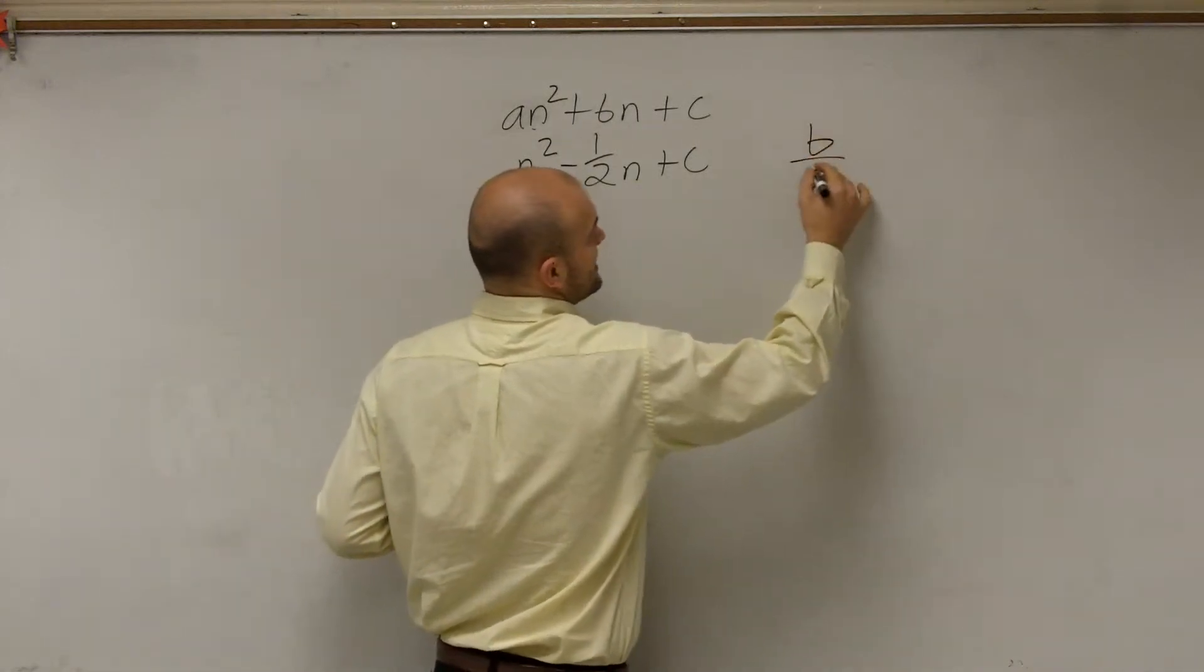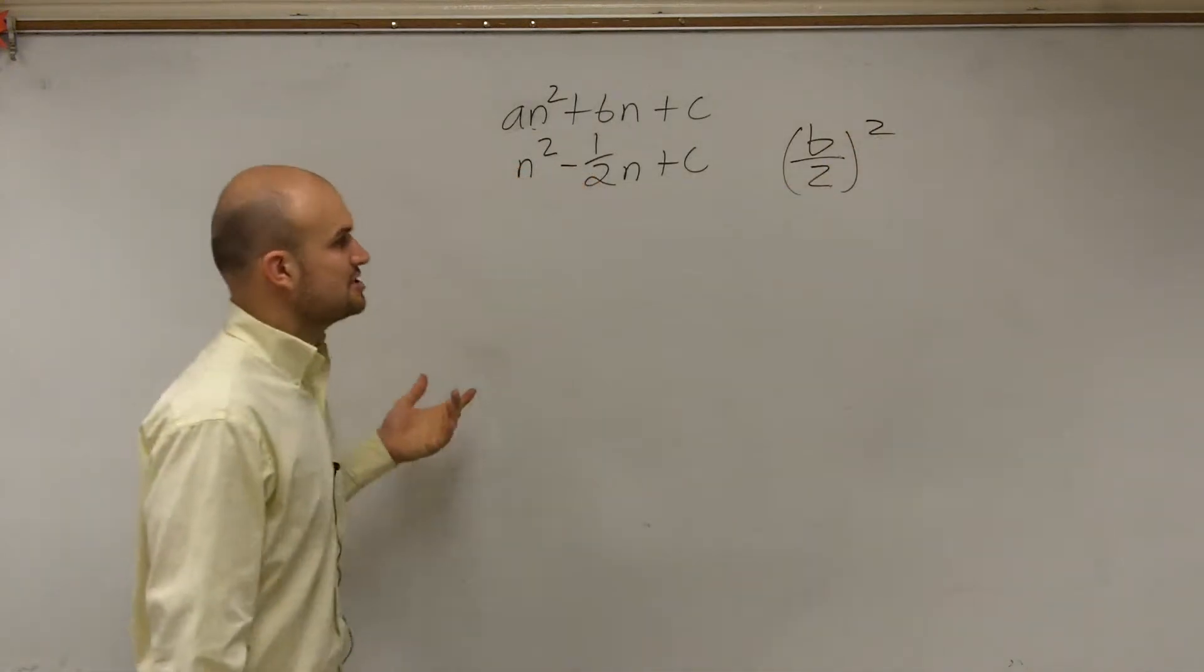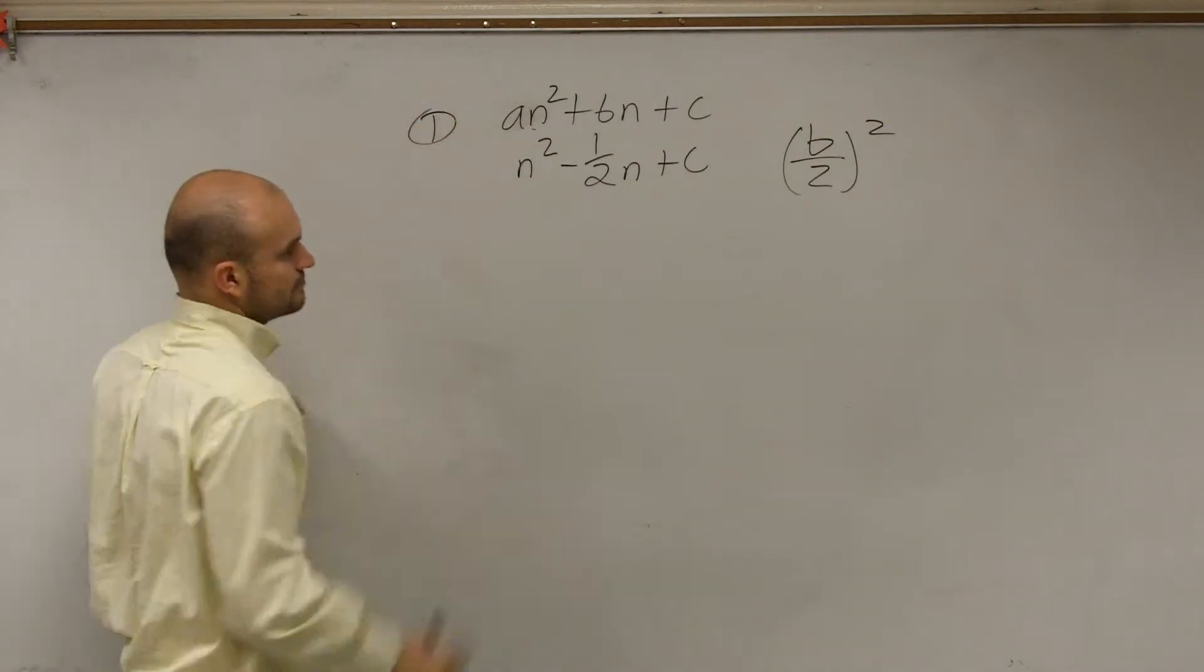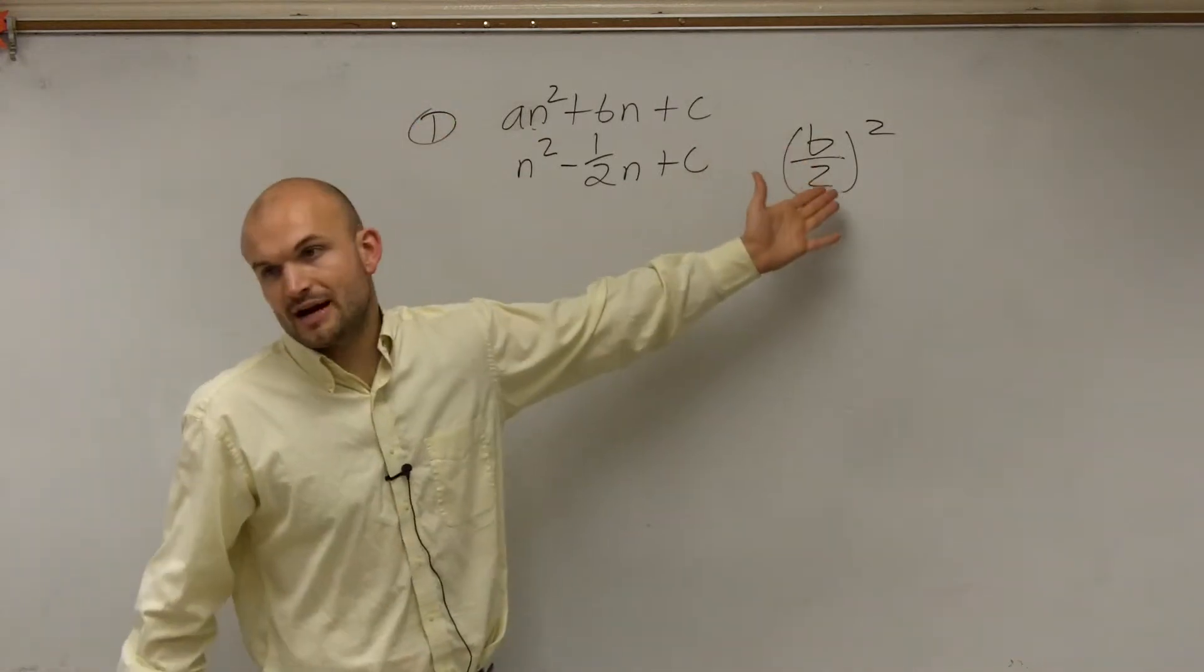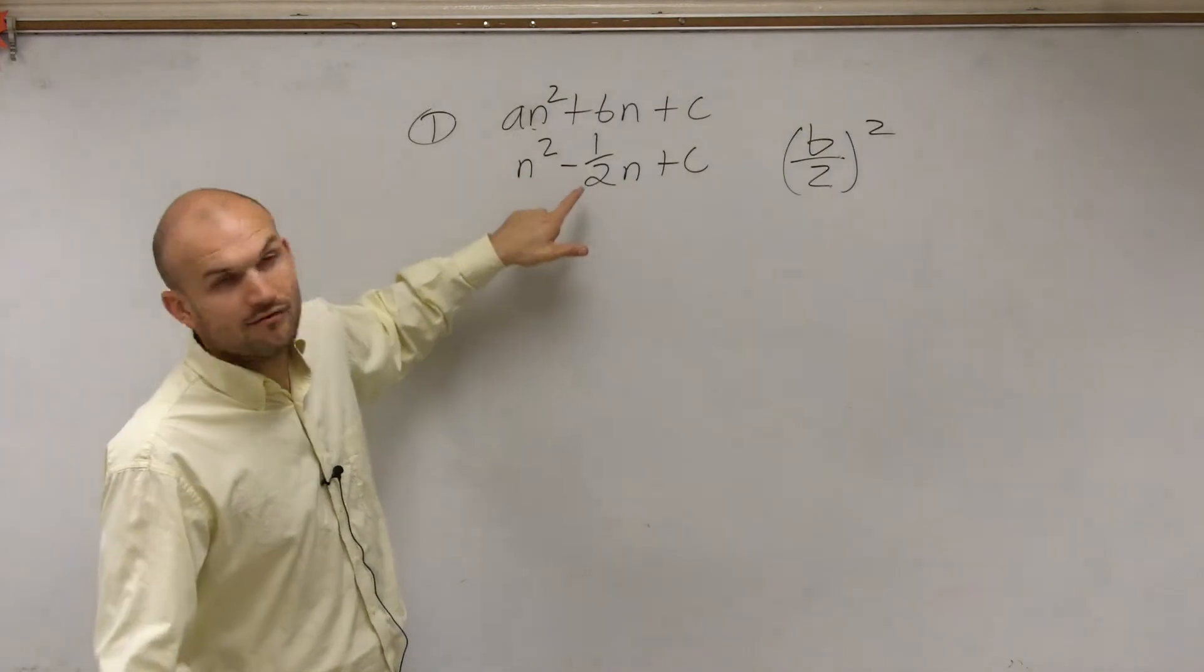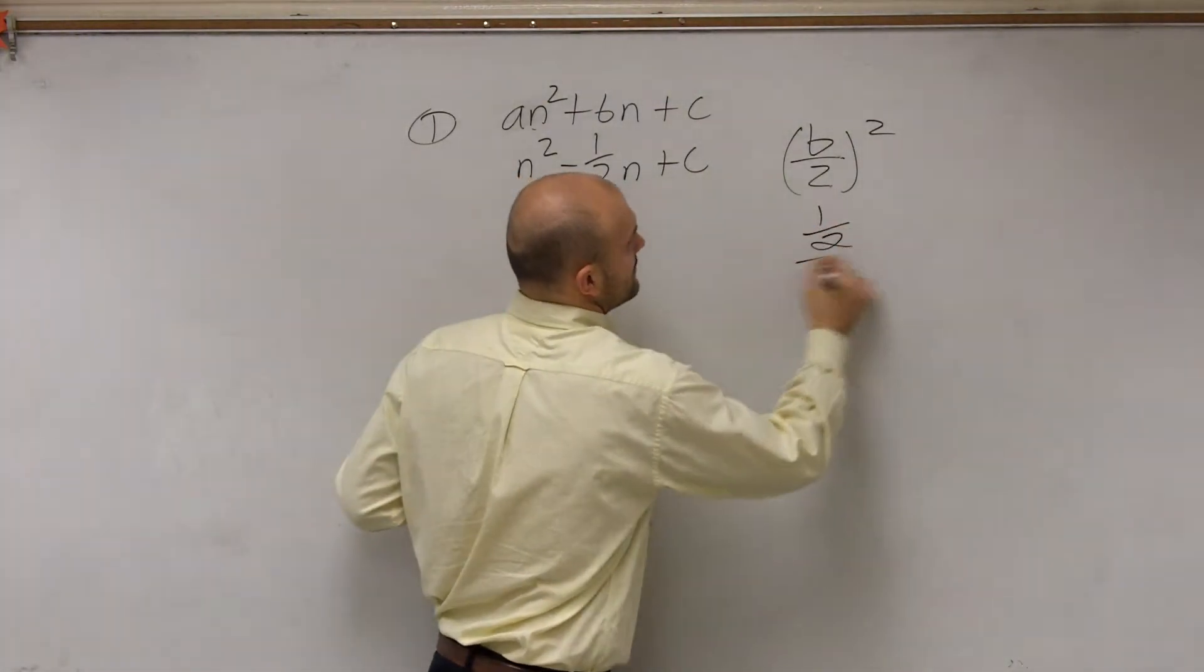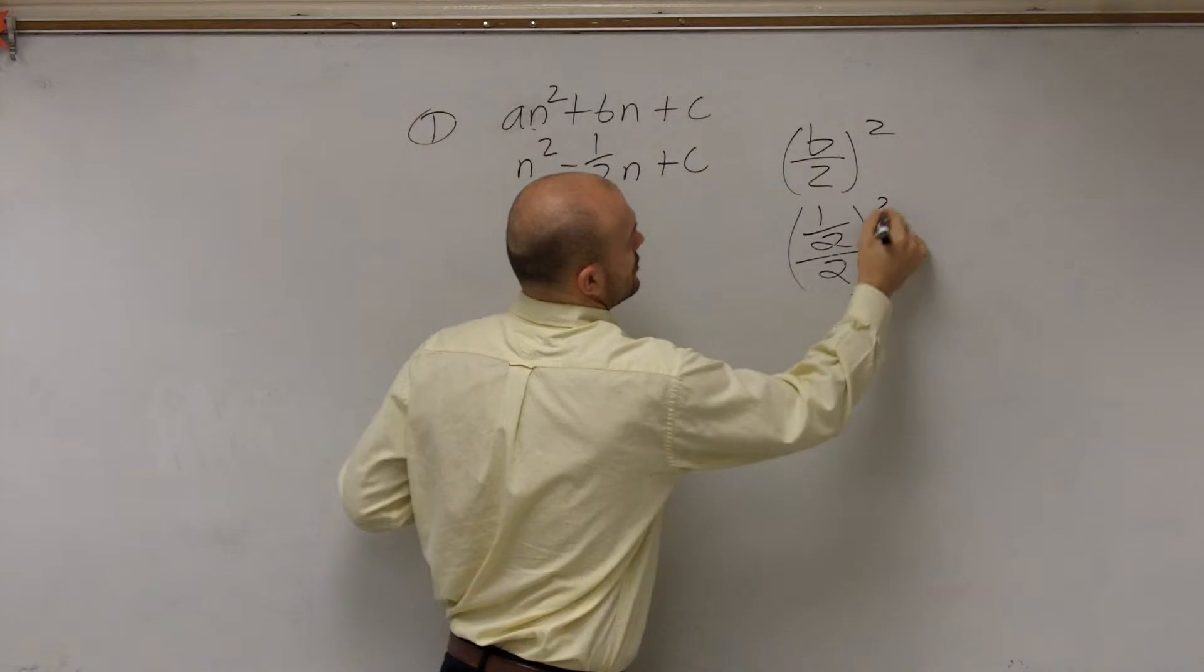Remember all it is is b divided by 2 squared. This is part one. So all you're going to take is your b divided by 2 and square it. So here I have 1 half divided by 2, 1 half divided by 2 squared.